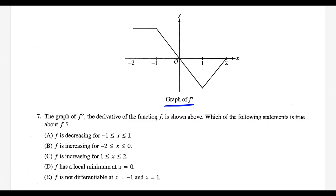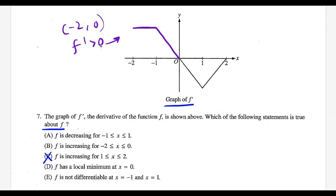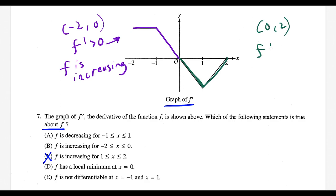For question 7 we have a graph of f prime and want to make a true statement about f. The common mistake is saying the graph is increasing from 1 to 2 so f must be increasing — that's a trap. Notice from negative 2 to 0, f prime is positive (above the x-axis), so f is increasing. From 0 to 2, f prime is negative, so f is decreasing. This matches choice B: f is increasing from negative 2 to 0.